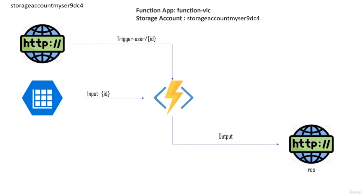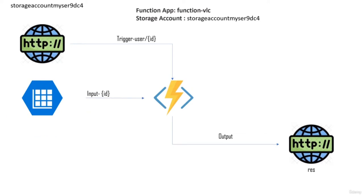The second example is a very common use case: passing a user ID as part of an HTTP endpoint and retrieving information about that user. The input is a storage account table, the trigger is a route 'user/{id},' and the ID is passed to the input binding as well. The code just needs to pass the input value to the output — a one-line code using this Azure function.